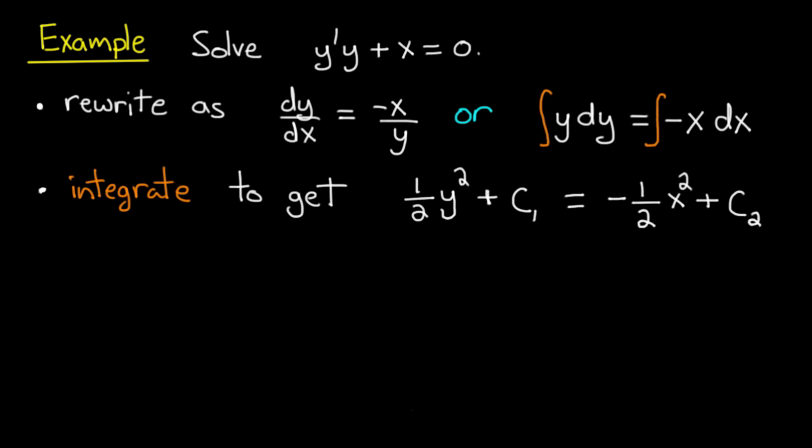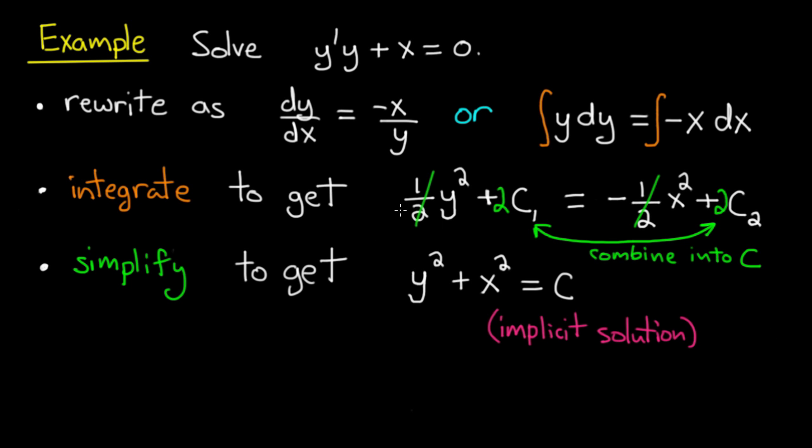Let's do a little simplifying. Let's multiply through both sides by 2, so we get y squared plus 2 c1 equals minus x squared plus 2 c2. Now c1 and c2 are both completely arbitrary constants that come from the integration. So we can combine the two into 1 constant c, which is equally as arbitrary. So for example I can subtract 2 c1 from both sides. Now if I move the x squared over to the left hand side I get y squared plus x squared equals c.